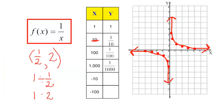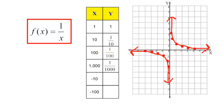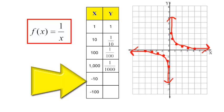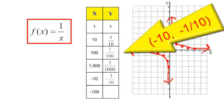If I plug in 1 half for x, y is 2. If x is 1 half, y goes up to 2. Similar things happen when I pick negatives for x. If x is negative 10 and I plug in negative 10, y is negative 1 tenth. So if I go to negative 10 on the x-axis, I go down just a little bit to negative 1 tenth.